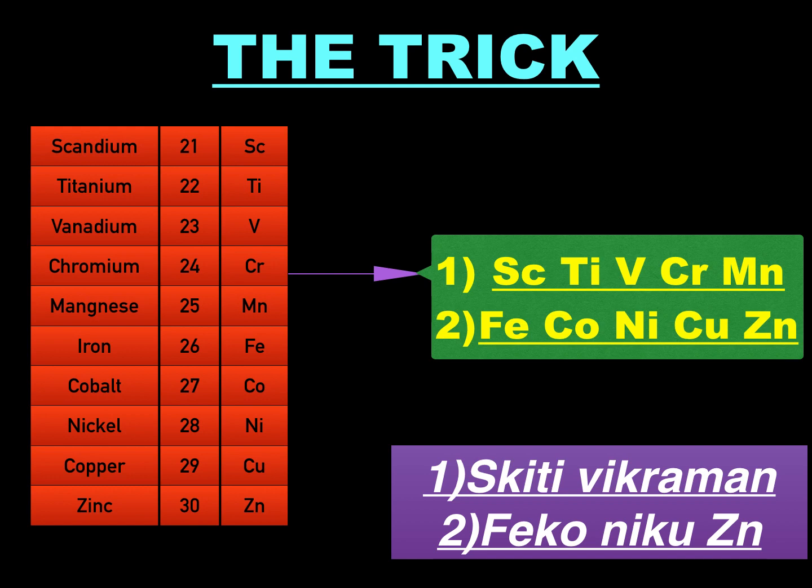So the trick — see in the chart. The 10 elements are Scandium, Titanium, Vanadium, Chromium, Manganese, Iron, Cobalt, Nickel, Copper and Zinc. Their atomic numbers are given adjacent to them, and their symbols are Sc, Ti, V, Cr, Mn, Fe, Co, Ni, Cu and Zn respectively.